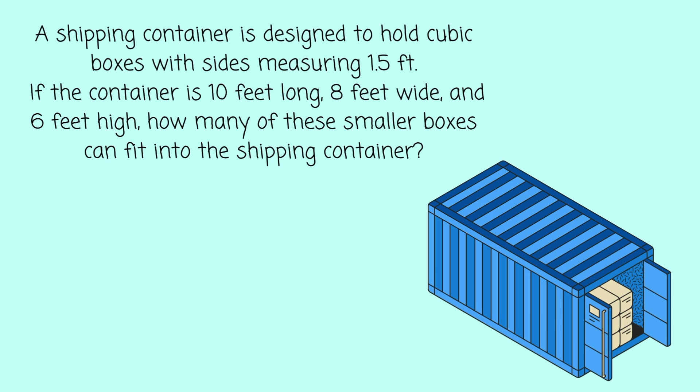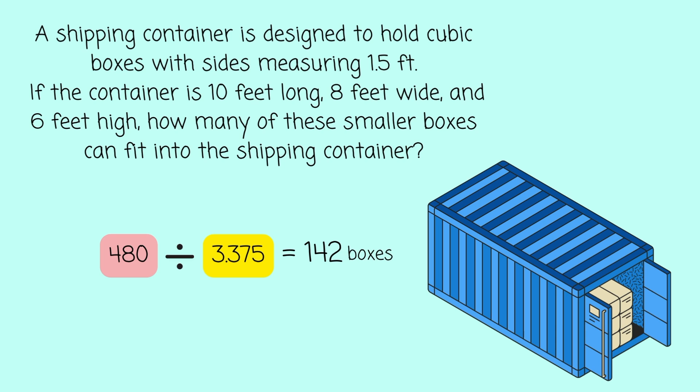But we're not quite done yet. I need to take the complete volume of the shipping container and divide it by the volume of the cubic boxes fitting inside, which is 3.375. When you divide those numbers, you get 142 boxes. That means 142 smaller boxes can fit into the shipping container.